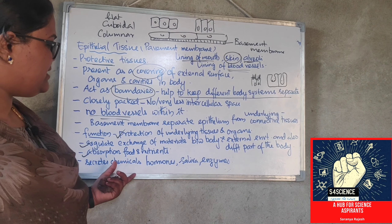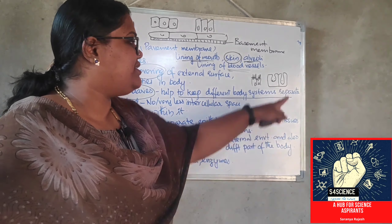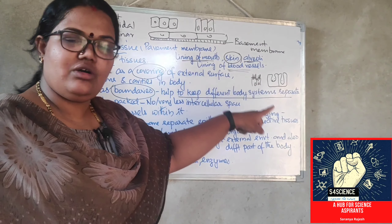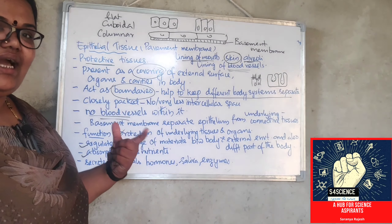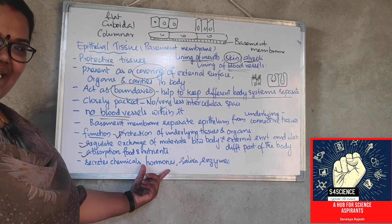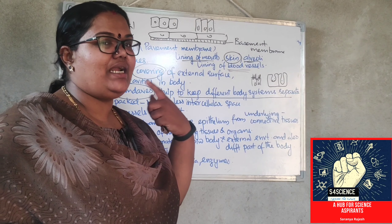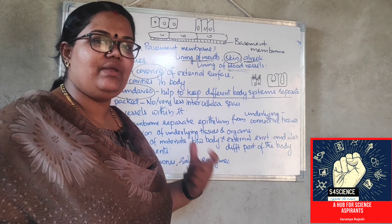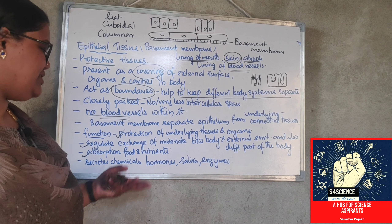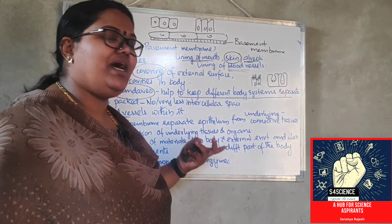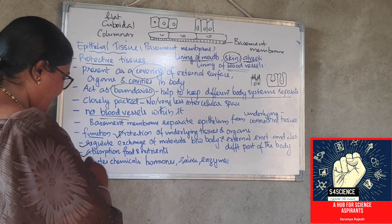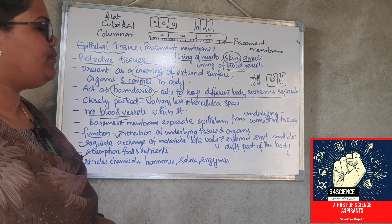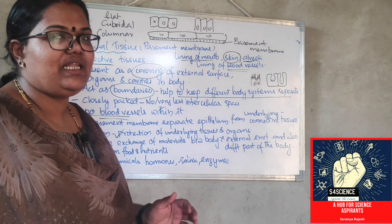Along with that, there will be glandular epithelium — glandular columnar epithelium or glandular cuboidal epithelium. Because of their glandular nature, they will secrete hormones, enzymes, or substances like saliva. The salivary gland also has glandular epithelium. So it can secrete different types of chemicals such as hormones, saliva and enzymes. It is acting as secretory in function. So these are the different functions of epithelial tissue. We have discussed epithelial tissue in detail. I hope you have a clear idea about epithelial tissue now.